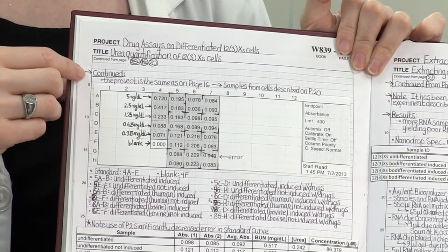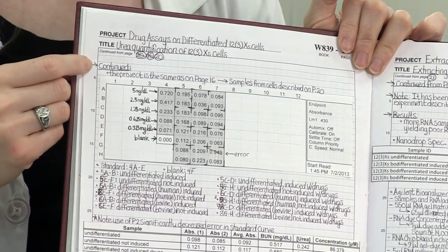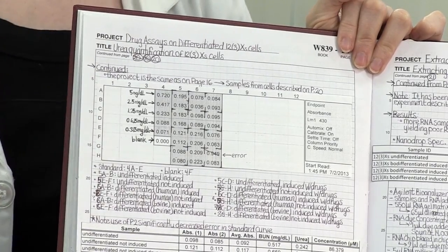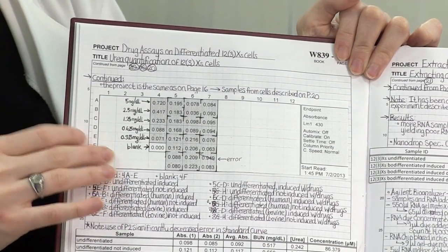It's also really important just to write a quick sentence about why you're doing this experiment, what your objective is. That helps keep your eye on the prize and helps you remember why you're doing it.